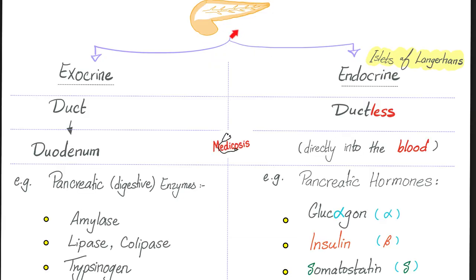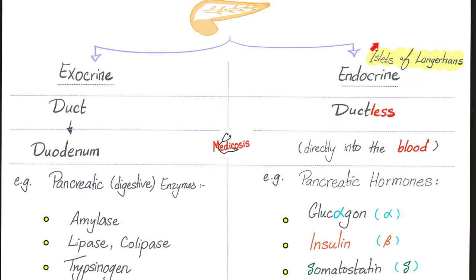The pancreas alone has both systems: exocrine and endocrine. The exocrine part has ducts, such as the pancreatic duct or main pancreatic duct. Endocrine is ductless. Exocrine secretes into the duct, which takes it to the nearby structure — the duodenum, part of your gastrointestinal system. The endocrine islets of Langerhans secrete their secretions directly into the bloodstream.